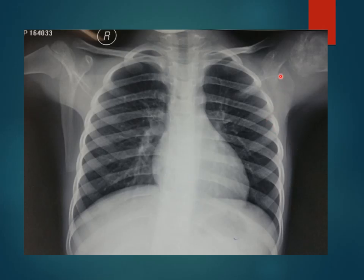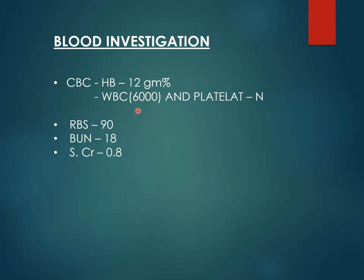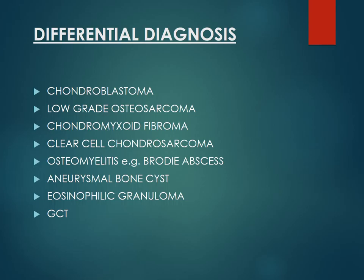A chest X-ray was also done to rule out secondaries, and the lesion of the humerus is visible in it as well. Blood investigations: hemoglobin was 12 g%, WBC count and platelet count were normal — indicating no infection. Other blood parameters were insignificant. Based on the radiographic picture, the first differential diagnosis is chondroblastoma.